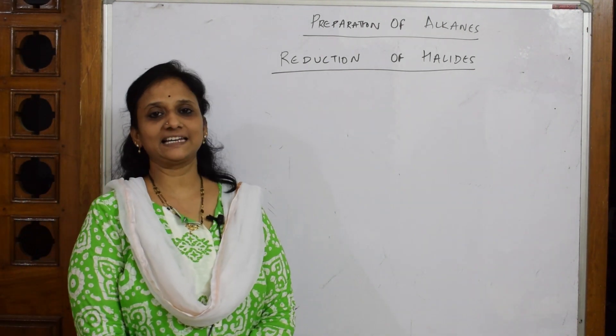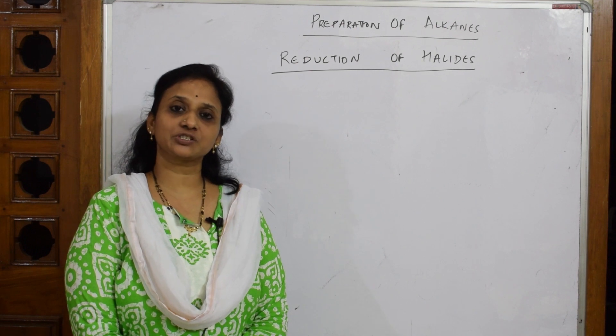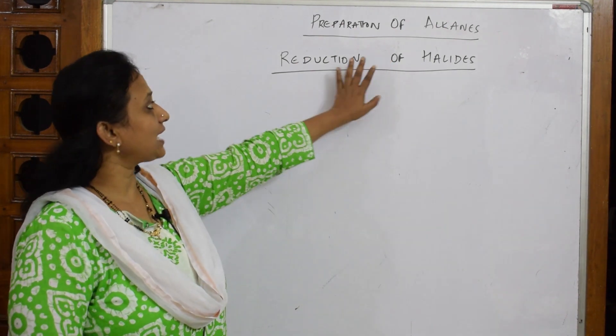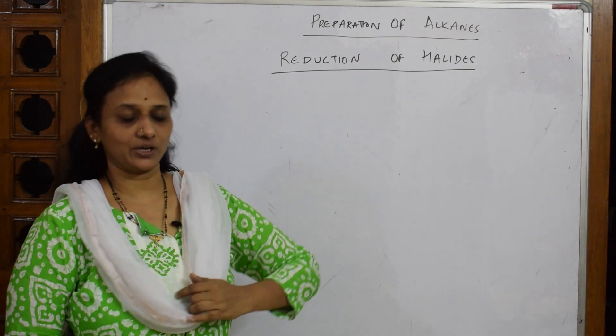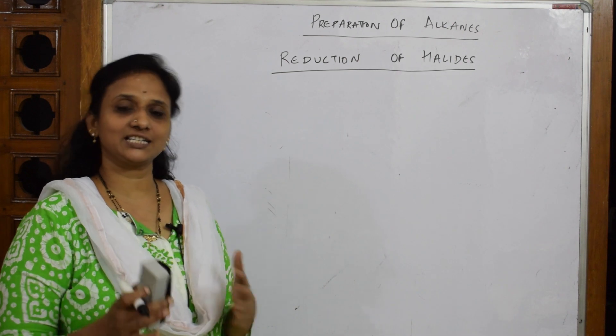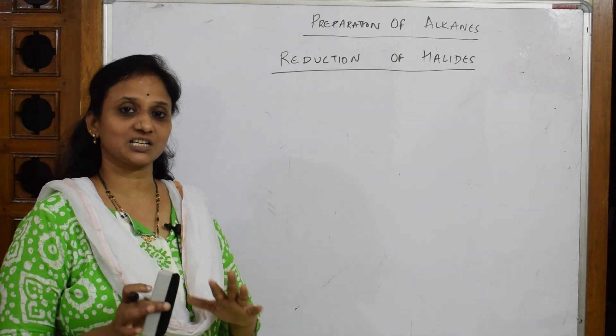Next, preparation of alkenes. We have already prepared alkenes from Wittig's reaction. Let's see what we're going to learn here. Basically, I can prepare alkenes with reduction of halides. Suppose there's one reaction given to you - how should I write in the exam, what are the products formed when such compounds are given?